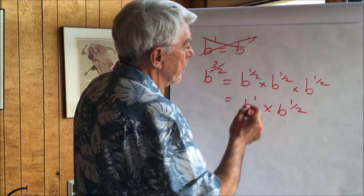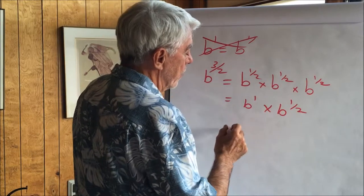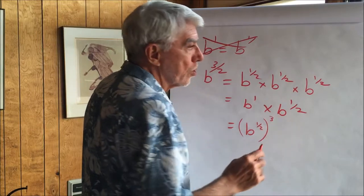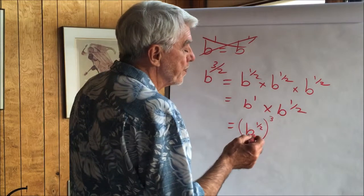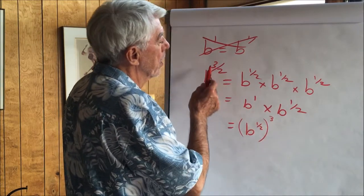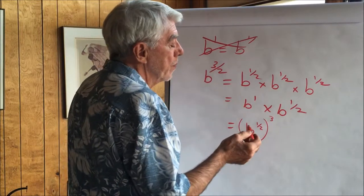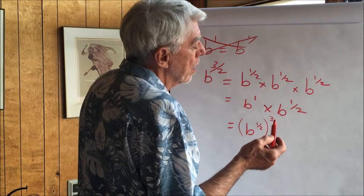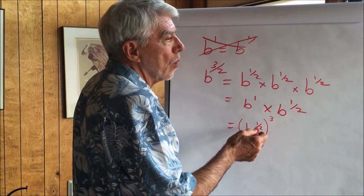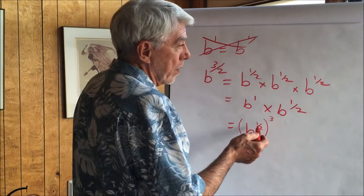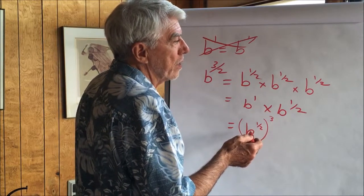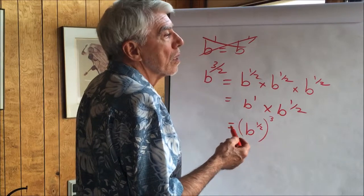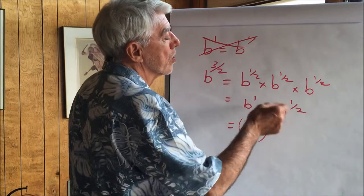We notice we have b to the half, b to the half, b to the half, and we can rewrite this as b to the one half cubed — cubed means a number times itself three times. So b to the three halves means b to the one half cubed, or raised to the third power. We get the same result: b to the one half with base 10 is the square root of 10, which is 3.2. And 3.2 cubed — 3.2 times 3.2 is 10, times 3.2 — gives us 32, as we saw.